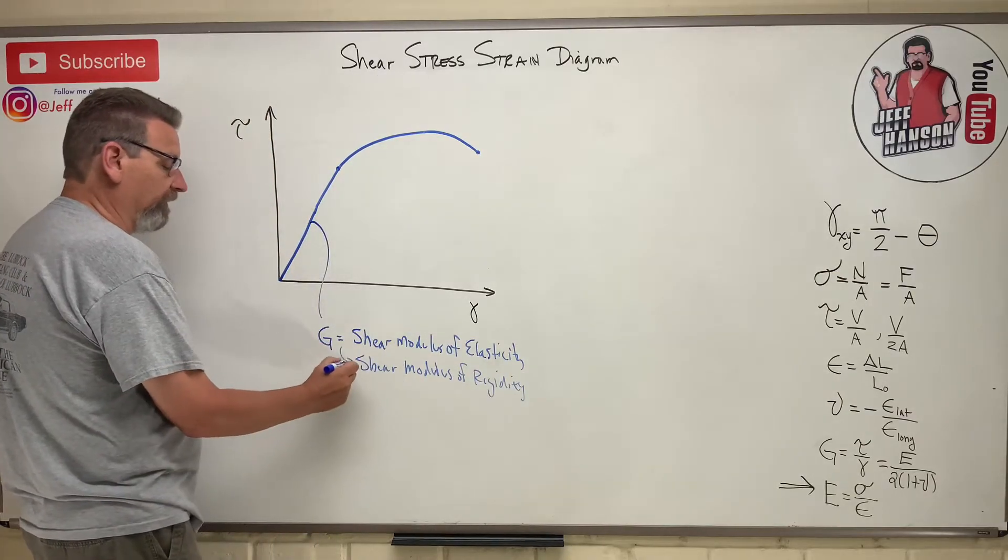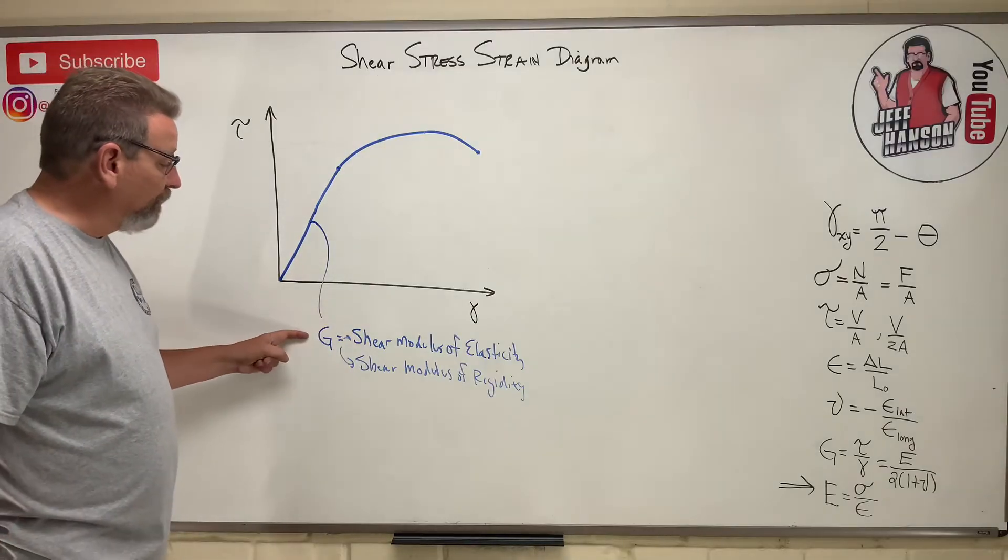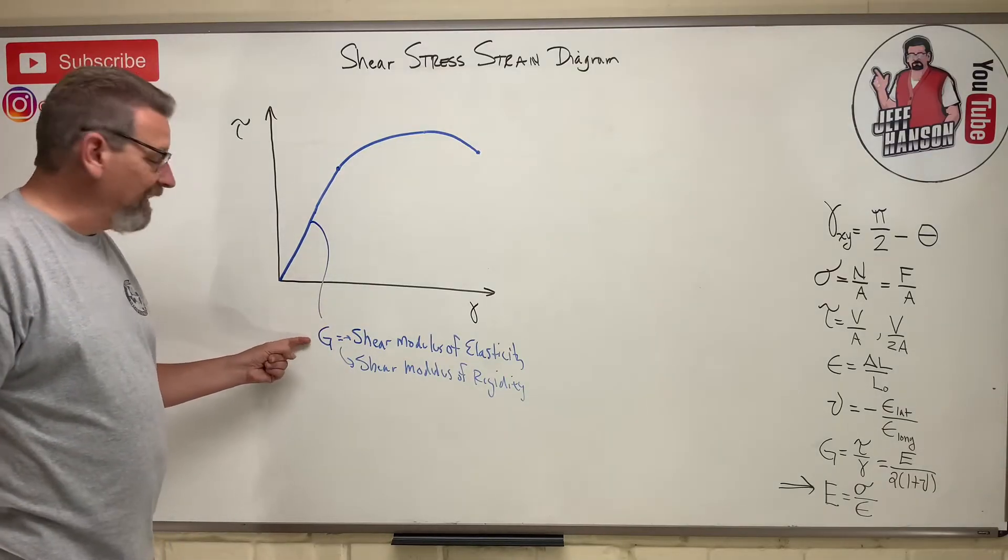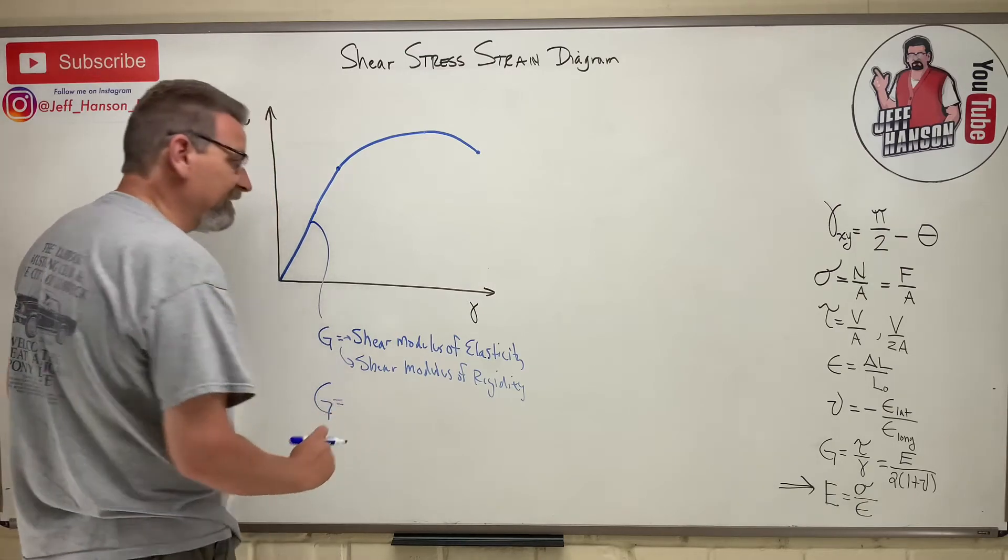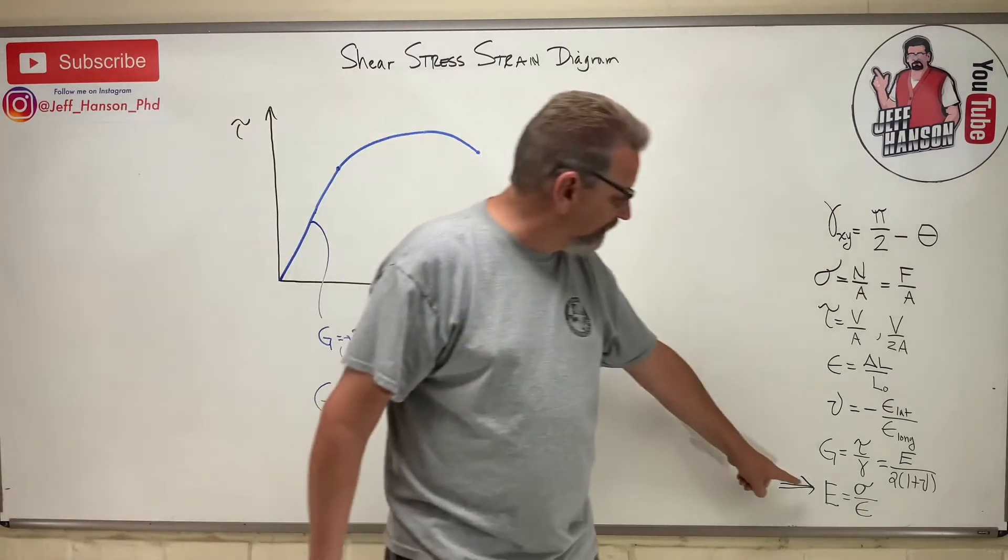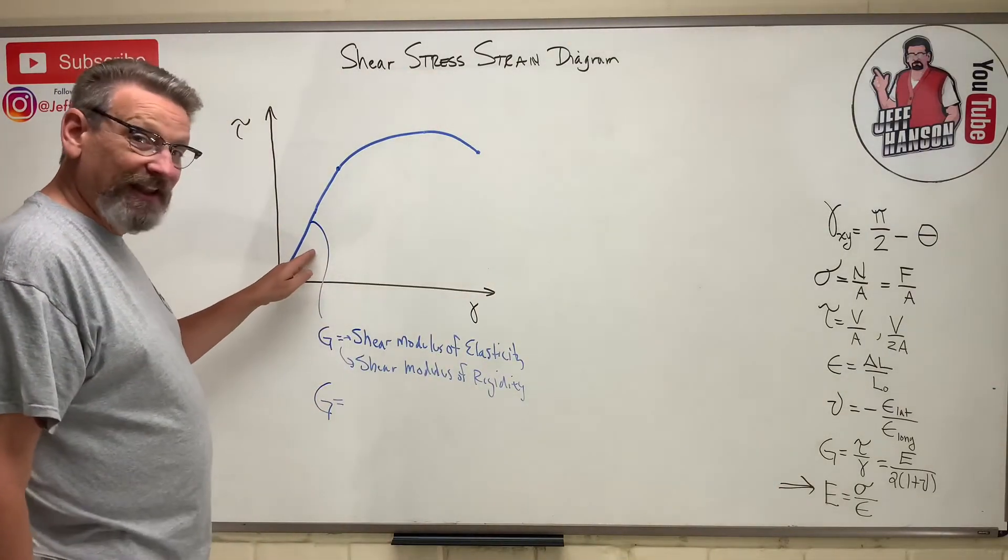So G, capital G, yo what's up G? G looks just like it did when we figured E. Remember this guy? So just when we figured him, G's the same. It's the slope of that line.